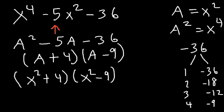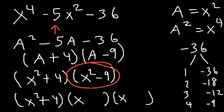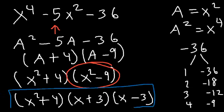We can use the difference of squares method to factor x squared minus 9. The square root of x squared is x, and the square root of 9 is 3, so one factor is positive and the other negative. The final answer is x squared plus 4 times x plus 3 times x minus 3. That's how you factor this expression.